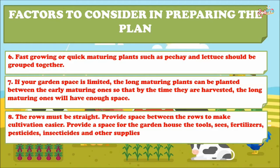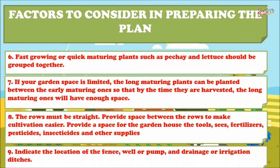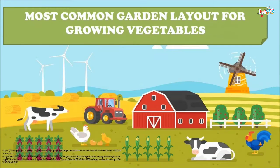The rows must be straight. Provide space between the rows to make cultivation easier. Provide space for the garden house, tools, seeds, fertilizers, pesticides, insecticides, and other supplies, and indicate the location of the fence, well or pump, and drainage or irrigation ditches.